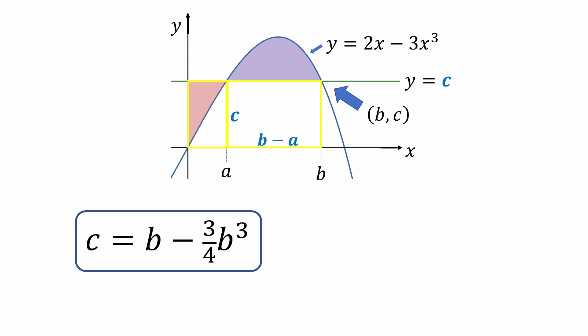Notice that the intersection point on the right is located at coordinates b comma c. Plugging b into the formula for the cubic, we get y equals 2b minus 3b cubed. But y equals c. So we can now say that c equals 2b minus 3b cubed.